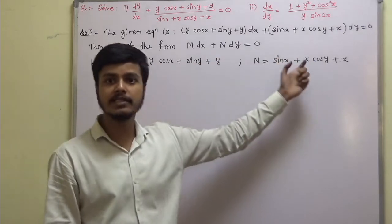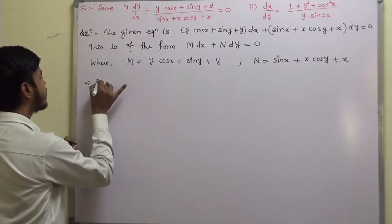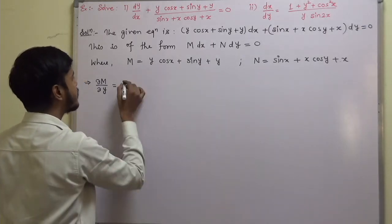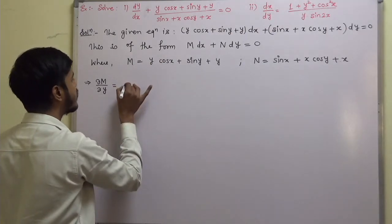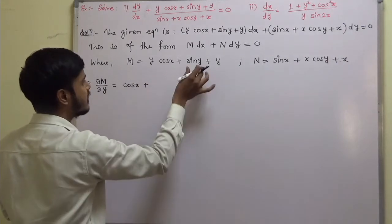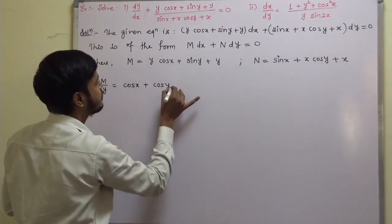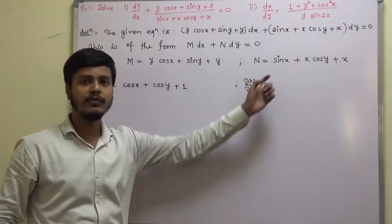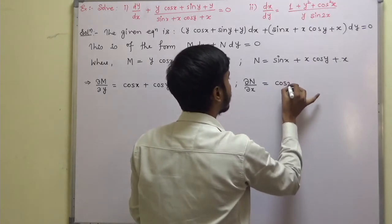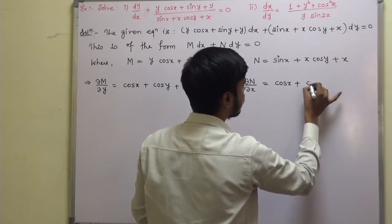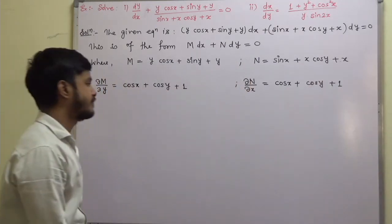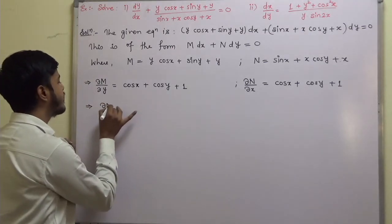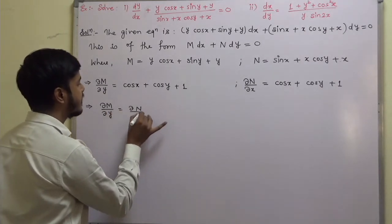Next, find the derivatives. What is ∂M/∂y? Keeping x constant, derivative of y cos x is cos x, derivative of sin y is cos y, and derivative of y is 1. So ∂M/∂y = cos x + cos y + 1. Now ∂N/∂x: derivative of sin x is cos x, derivative of x cos y with respect to x is cos y, and derivative of x is 1. So ∂N/∂x = cos x + cos y + 1. Both are the same.